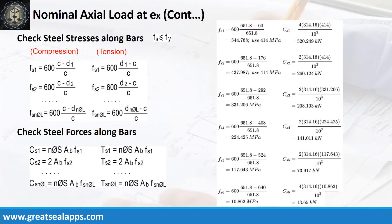Follow the given computations for stress and force of each bar layer. Stress at D sub 1 equals 414 MPa with compressive force equals 520.249 kN. Stress at D sub 2 equals 414 MPa with compressive force equals 260.124 kN. Stress at D sub 3 equals 331.206 MPa with compressive force equals 208.103 kN. Stress at D sub 4 equals 224.425 MPa with compressive force equals 141.011 kN. Stress at D sub 5 equals 117.643 MPa with compressive force equals 73.917 kN. Stress at D sub 6 equals 10.862 MPa with compressive force equals 13.65 kN.